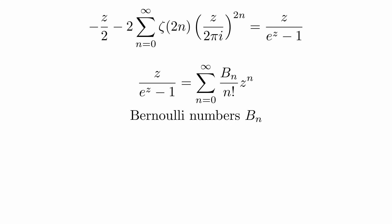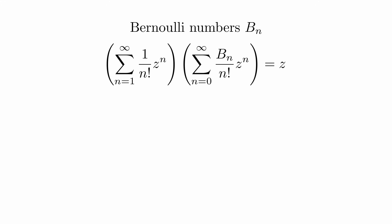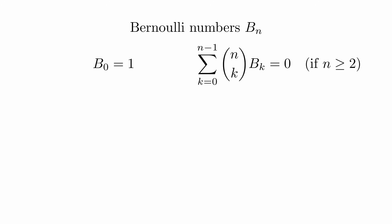We can multiply on both sides of the equation by the denominator and plug in the Taylor series of the exponential function at zero to get this equation. We can now multiply the left side out and compare coefficients. We get that the zeroth Bernoulli number must be one and that this sum must always be zero. By multiplying with n factorial, we can rewrite this like this. Using only these two properties, we can calculate all the Bernoulli numbers.